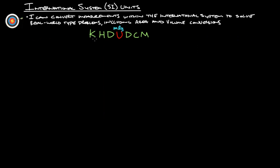Another common way to do conversions — and I really like this way — is: kilo, hecta, deca, U for units, desi, centi, and milli. The way to remember that is: King Henry Died Unexpectedly Drinking Chocolate Milk. The U is in a different color because that's the units position, and the most common units are meters, liters, and grams. Let's use that to solve a few things.